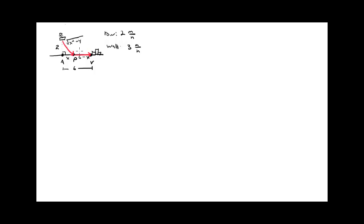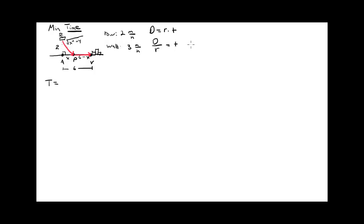These things represent distances: two miles across, x miles along shore, six miles total, six minus x for walking, and √(x² + 4) for rowing. Since I want to minimize time, I need a time function T. Using distance equals rate times time — solving for time means dividing distance by rate. For example, if the rowing distance were four miles at two miles per hour, that's four divided by two equals two hours.